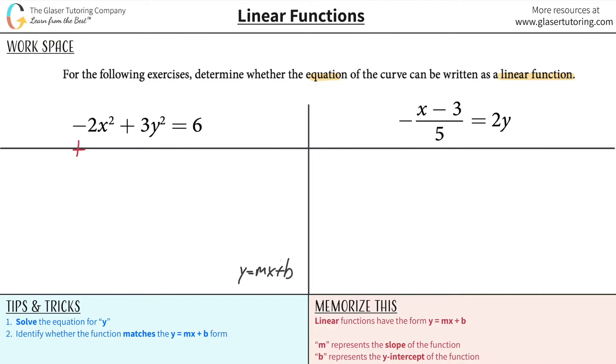So if that's the goal, add the 2x squared on over to the right-hand side. That would cancel, leaving you with 3y squared is equal to 2x squared plus 6.